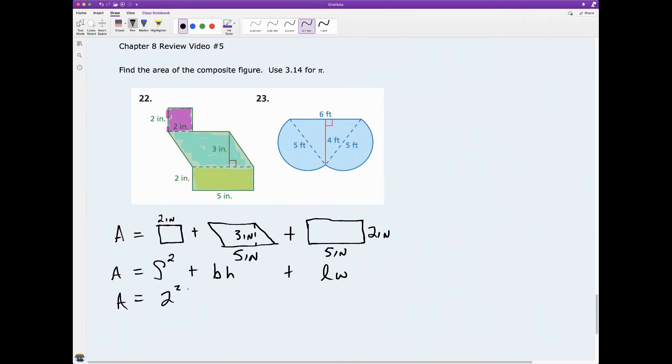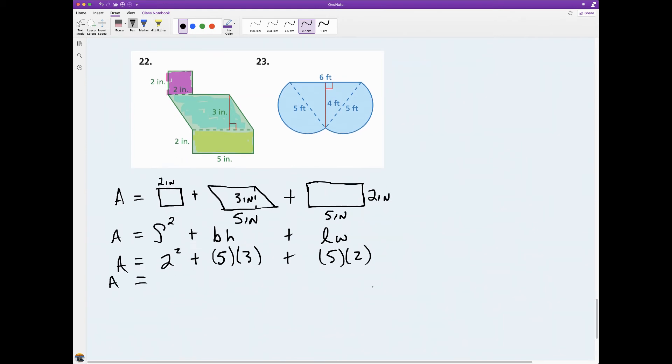I just work that out and what do I get? I get 4 plus 15 plus 10, and so the area of this composite figure is 29 inches squared. Remember, area is always square.